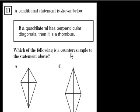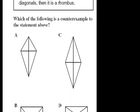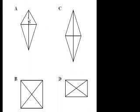Which of the following is a counterexample to the statement above? They're saying if it has perpendicular diagonals, then it's a rhombus. So if we could find something that has perpendicular diagonals that is not a rhombus, then we have a counterexample. This one has perpendicular diagonals — the diagonals are perpendicular to each other, all 90-degree angles — and this is clearly not a rhombus. This is like a kite. This is not parallel to this, and that is not parallel to this, so this is not a rhombus. So this is definitely a counterexample.